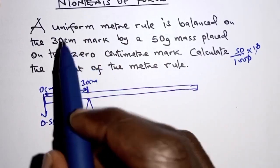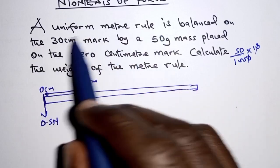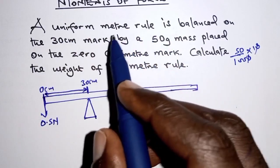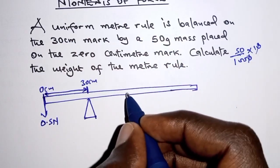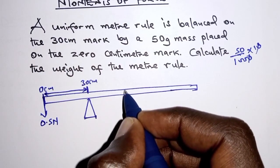And from the fact that it is a uniform meter rule, usually we know that meter rules are uniform and therefore their weights will always act at the center. So the center of a meter rule is the 50 centimeters mark.